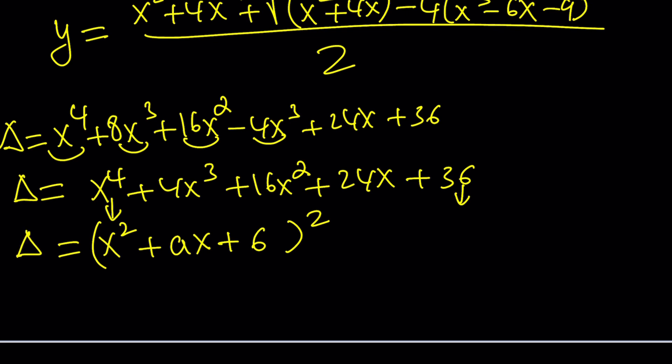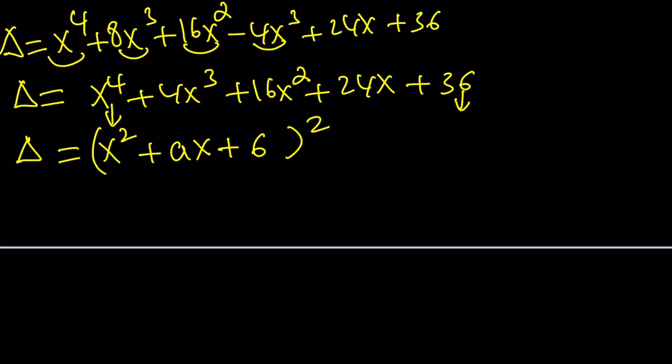So our goal is to solve for a in this equation. But can I tell you that a equals 2? You can easily find it. In other words, our discriminant is going to be (x² + 2x + 6)². That's easy to find. Just expand it and set it equal to the expression. You're going to have more than one equation, but they're all going to give you the same a value.